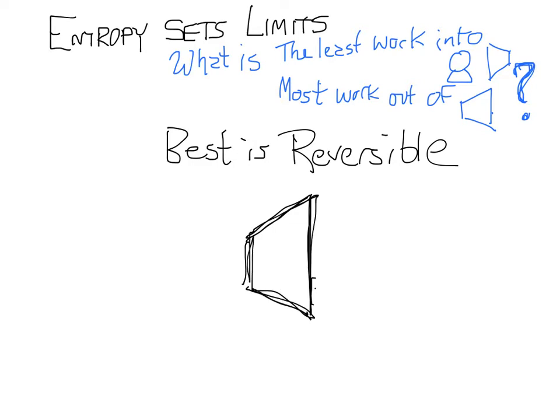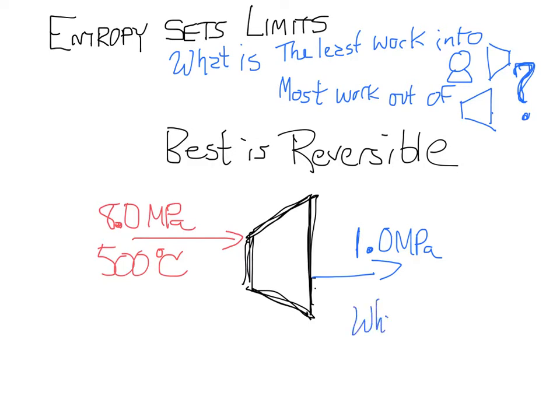So let's try that right now. I'm going to ask you for the most work we could possibly get out of this turbine. We're going to use some steam. So we have steam coming in at 8 MPa and 500 degrees C, and it's going to leave at 1 MPa. And our question is, what is t out?